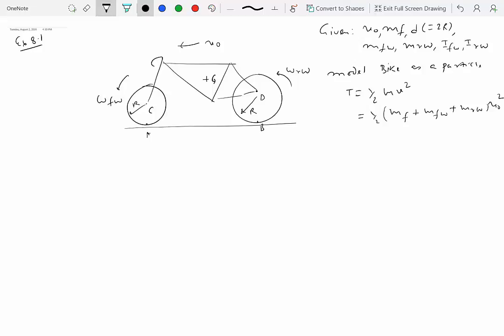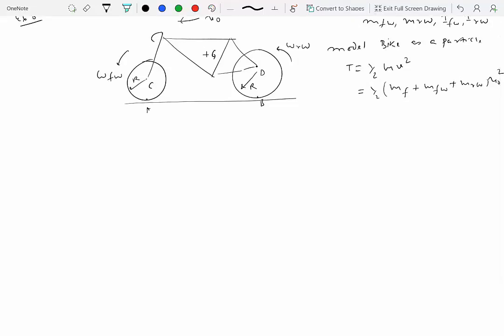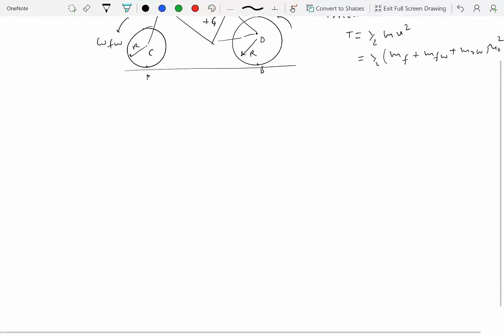But now we know something about the kinetic energy for a rigid body which moves in a plane, we can probably do better. So if you notice, we have the frame over here, the frame of course is not rotating. The frame can be seen as a translating object. And then we have the front wheel and the rear wheel. So what we'll do is we will write the kinetic energy of the bike as kinetic energy of the frame plus kinetic energy of the front wheel and the kinetic energy of the rear wheel.